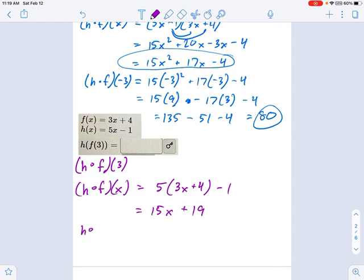And now if I want to say h of f of 3, that's going to be, well, 15 times 3 plus 19, which equals 45 plus 19, 65, 64, I think. So we get 64.